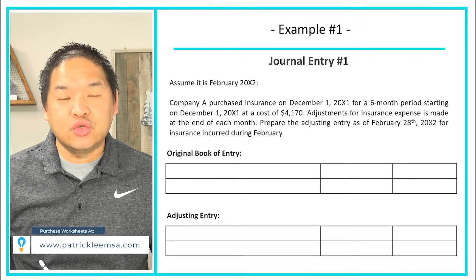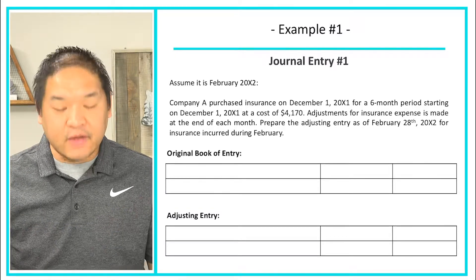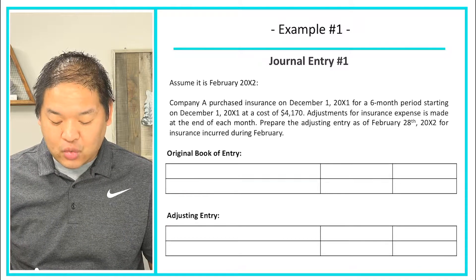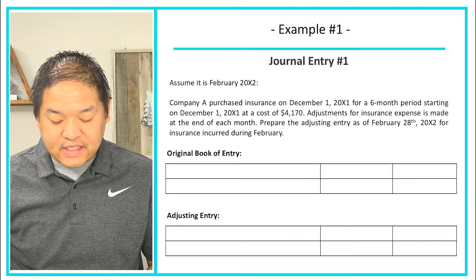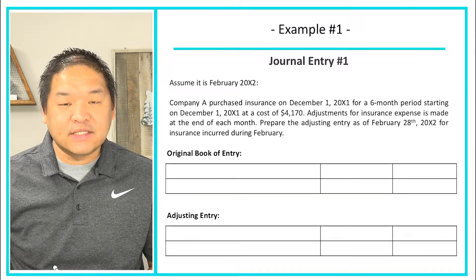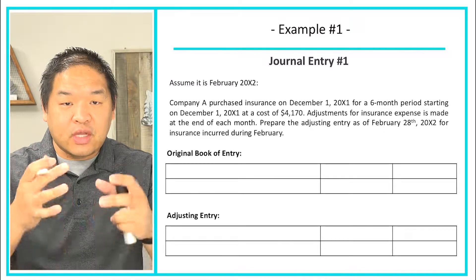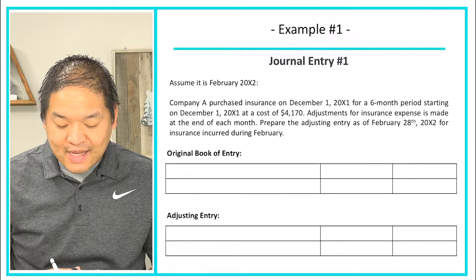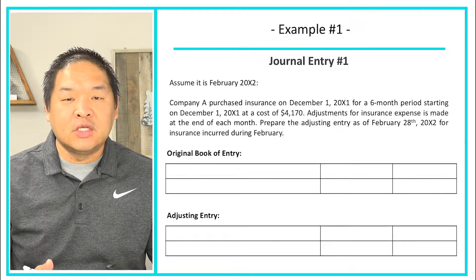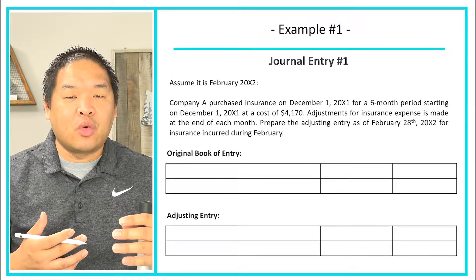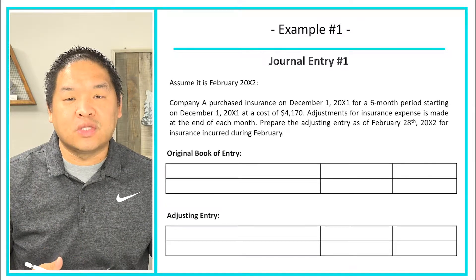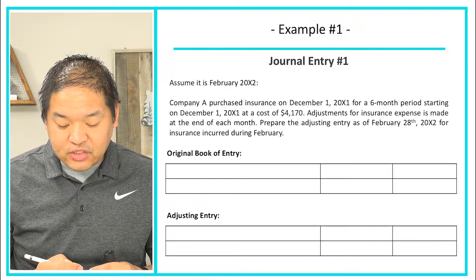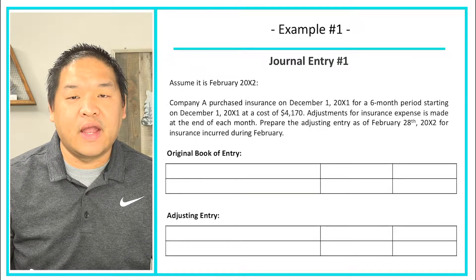In our first journal entry, assume that it is February 20x2, the second year of a company. Company A purchased insurance on December 1st, 20x1 for a six-month period starting on December 1st, 20x1 at a cost of $4,170. The adjustment for insurance expense is made at the end of each month, so each month we expense the portion of insurance used that month.